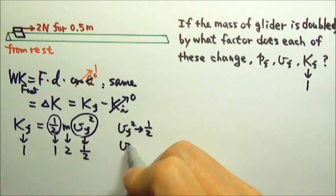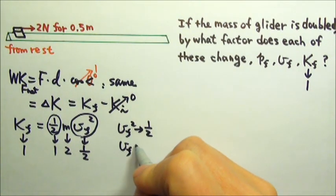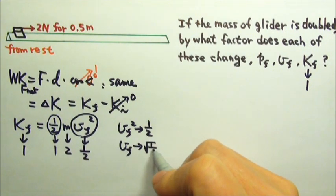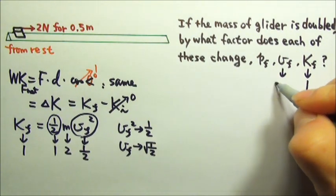And we want to know by what factor the final velocity changes. We have to take square root on both sides. So this changes by a factor of square root of ½.